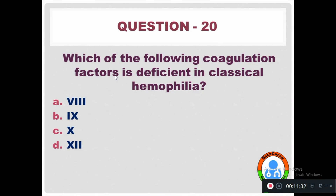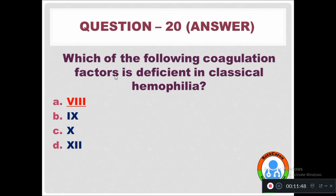Question 20: Which of the following coagulation factors is deficient in classical hemophilia? Factor 8, Factor 9, Factor 10, or Factor 12. In classical hemophilia, Factor 8 is deficient or absent.